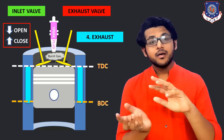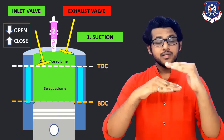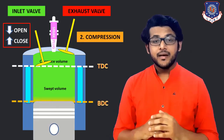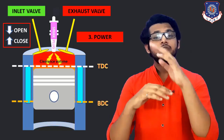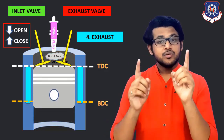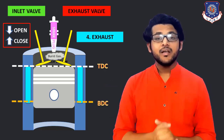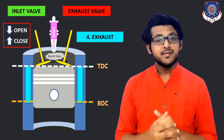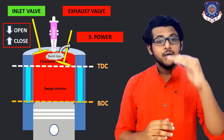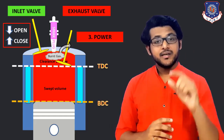Now let's come back to the first stroke, that is the suction stroke. When the exhaust is done and the piston reaches TDC, you can see that at TDC both valves are open — inlet valve is also open, exhaust is also open. This is called valve overlapping. We are giving this because we have two volumes inside the cylinder: the swept volume where the piston is moving, and above that, where the piston cannot reach, it is called clearance volume.